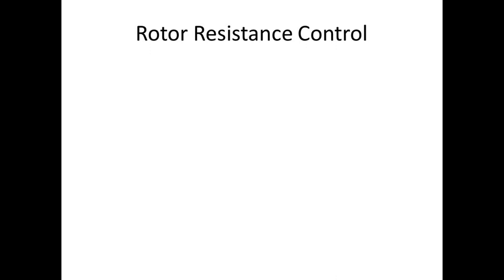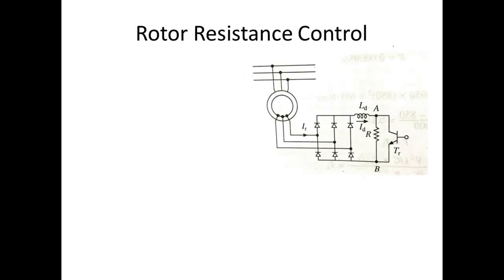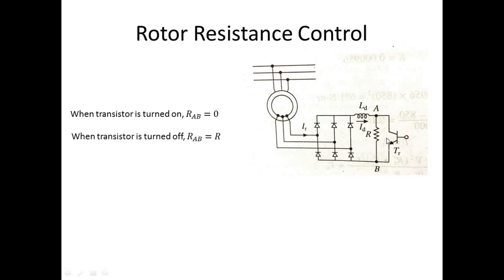To control this resistance in a stepwise manner, we use a power electronic circuit. We convert the three-phase rotor circuit using a diode rectifier to DC, and connect a resistance here. A power electronic switch is placed in parallel with the resistance. When the switch is turned on, the resistance across it equals zero; when the switch is turned off, the resistance equals R.